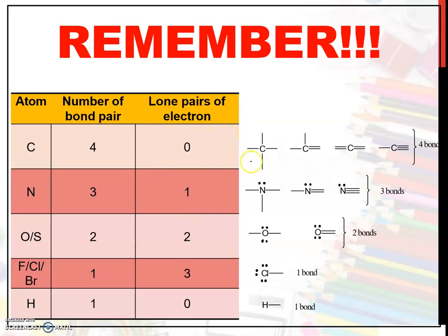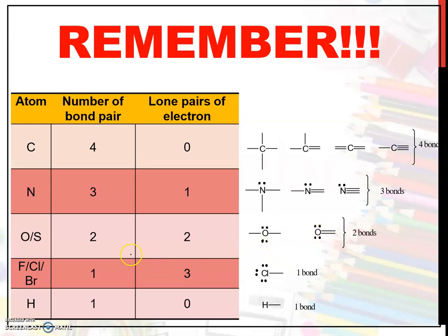Remember: carbon can form four bonds but has no lone pairs, so it can form single, double, or triple bonds. Nitrogen can form three bonding pairs with another atom — either single, double, or triple bond — and has one lone pair, since it has five valence electrons. Carbon has four valence electrons. Oxygen can form two bonding pairs and has two lone pairs, so it can form single or double bonds. Fluorine and bromine can form one bonding pair and have three lone pairs. Hydrogen can only form one bond.